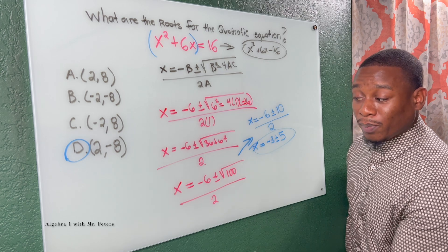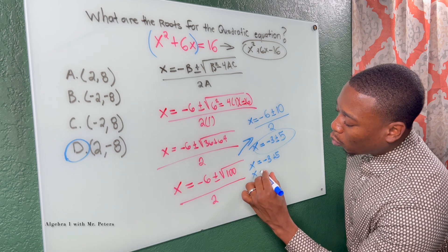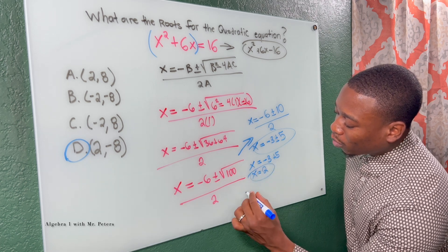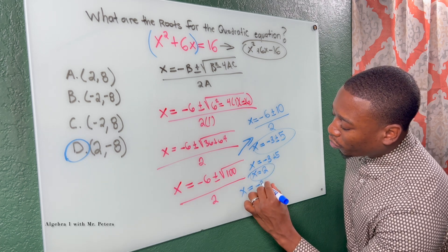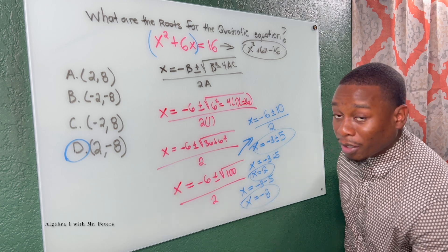So now when we split the equation, x is equal to negative three plus five, we're going to get the same answers. x is equal to two. Or if we do the other equation and subtract five, we know x is equal to negative eight.